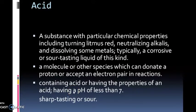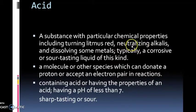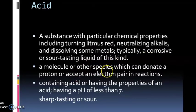First of all, we need to know that an acid is called a substance with particular chemical properties, including turning litmus red, neutralizing alkalis, and dissolving some metals. An acid is a substance which follows certain chemical properties and can donate a proton — it is a molecule or species that can donate a proton and will accept a proton.